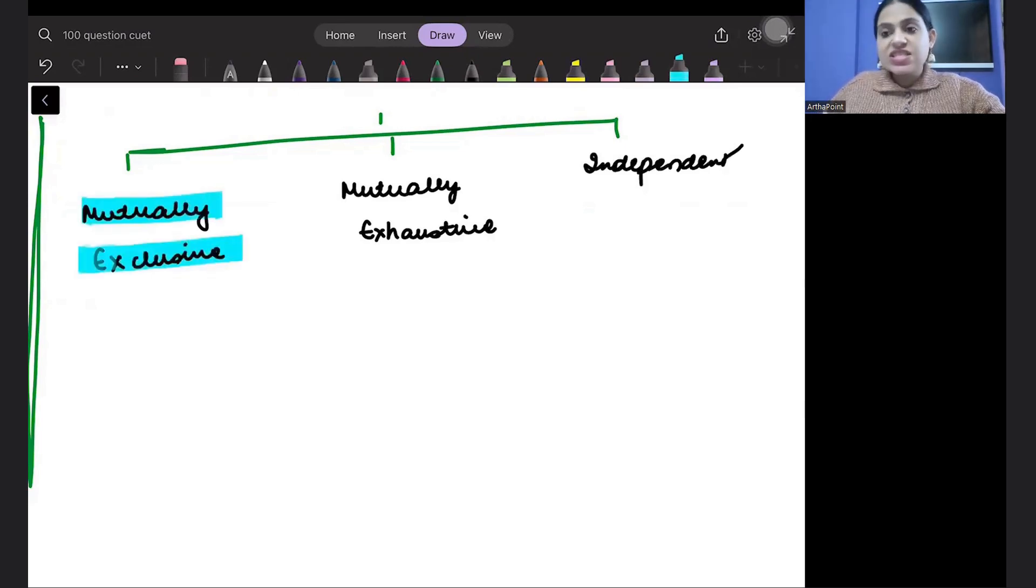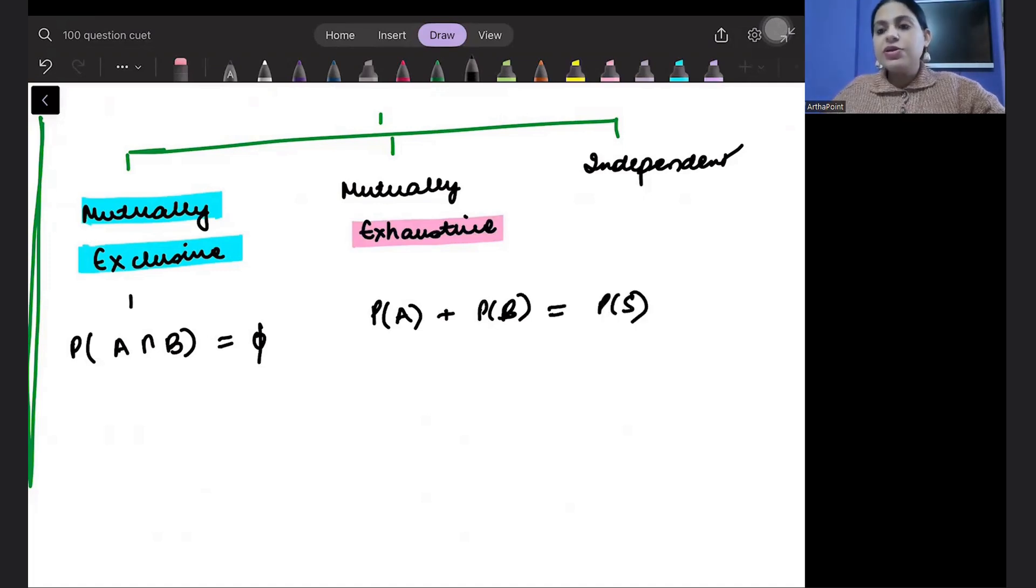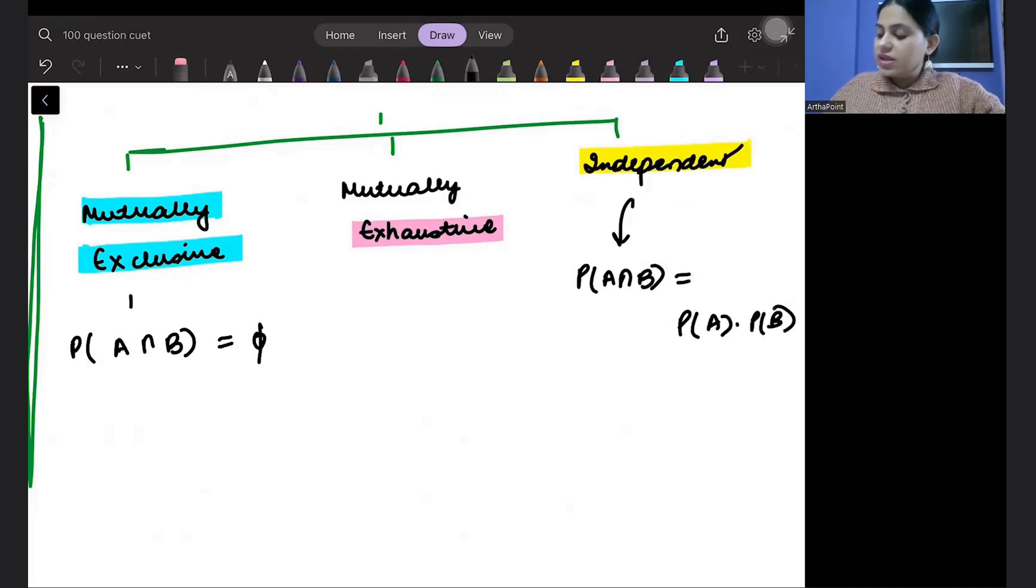Mutually exclusive means exclude, there is nothing common between the two. Mutually exhaustive means A or B together cover the entire sample space. Independent means that probability of A intersection B is A into B. A happening does not affect B, they are independent of each other.